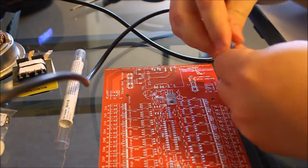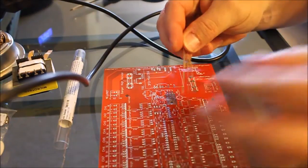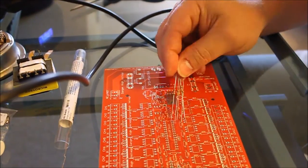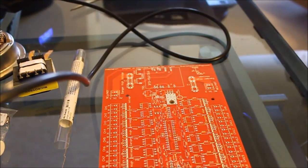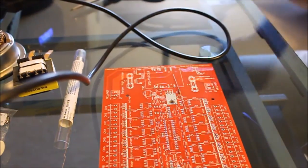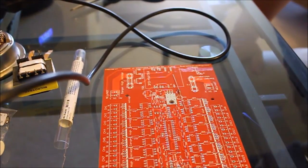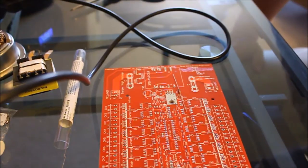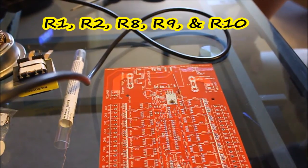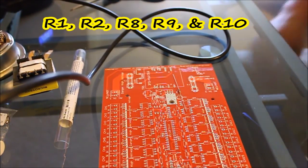We'll put four of these aside and bring back one. If you look on your instructions, the 1 kilohm resistors are for R1, R2, R8, R9, and R10.